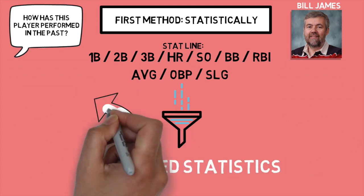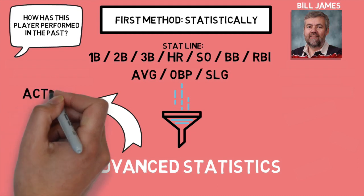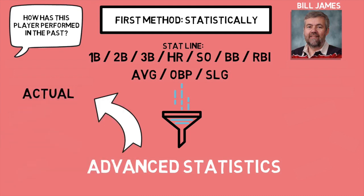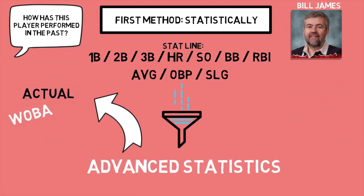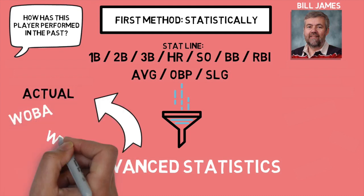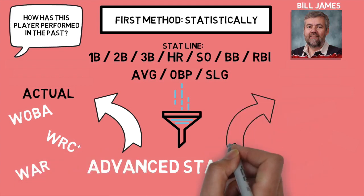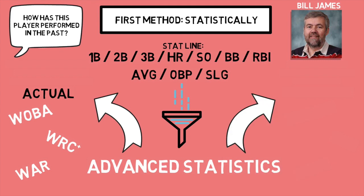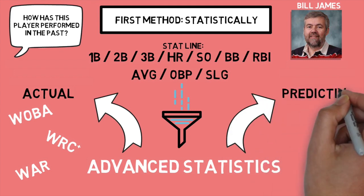Underneath that umbrella of advanced statistics, you have several subdivisions — the two main ones being actual stats, such as wOBA, Weighted Runs Created Plus, or WAR, which we've covered on the channel before, or a predictive set of stats, such as xwOBA, expected batting average, or expected slugging.